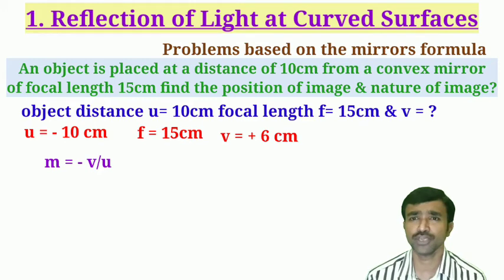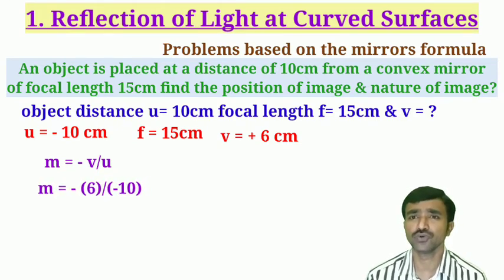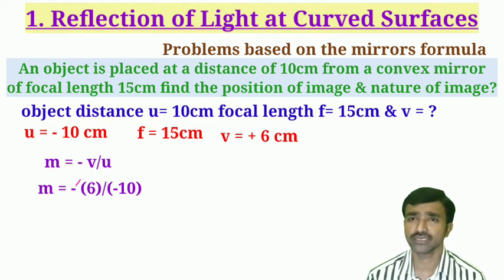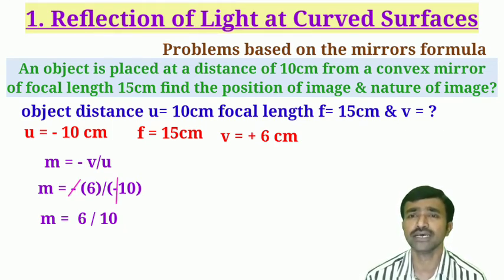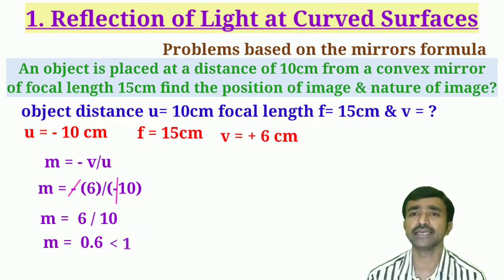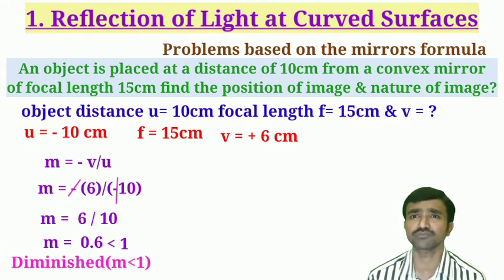To determine whether the image is erect or inverted, and diminished or enlarged, we use magnification: M = −v/u. Substituting: M = −(+6)/(−10) = −6/−10 = 6/10 = 0.6. So M = 0.6, which is less than 1, indicating the image is diminished. The magnification value is positive, meaning the image is above the principal axis.